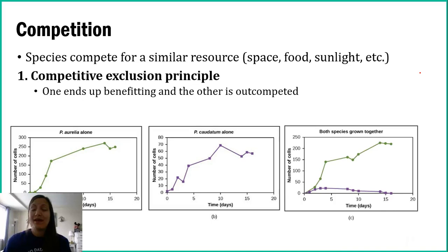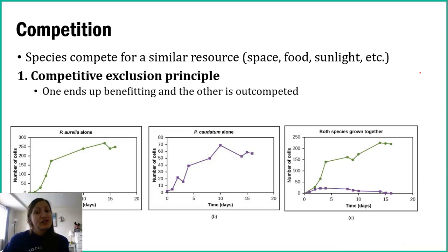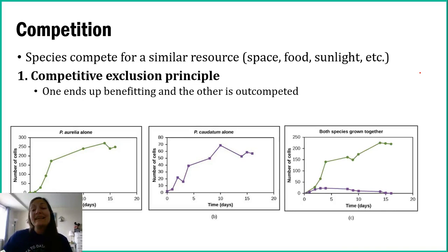The next relationship we'll talk about is competition. Competition is a familiar word, and in a biological sense it refers to when species compete for a similar resource. Depending on the species, they might be competing for sunlight if they're plants, for space or food if they're animals, or for food if they're bacteria or fungi.